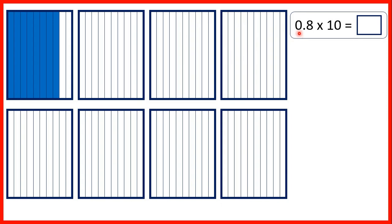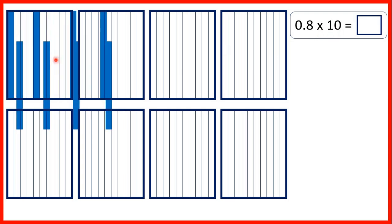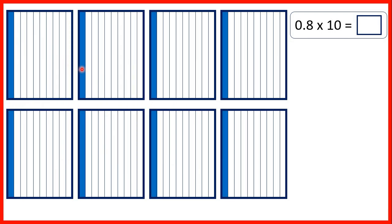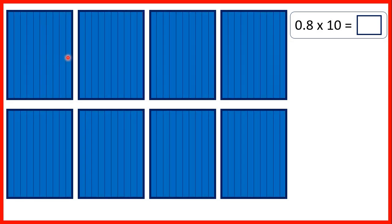Now let's look at 0.8 times 10. Instead of adding 8 tenths repeatedly, we can think of multiplication as making things 10 times bigger. We split up those 8 tenths into 8 different rectangles. One way of thinking about multiplying by 10 is making things 10 times bigger — so if we make our tenths 10 times bigger, we've now got wholes. We've got 8 whole rectangles, so our answer is 8.